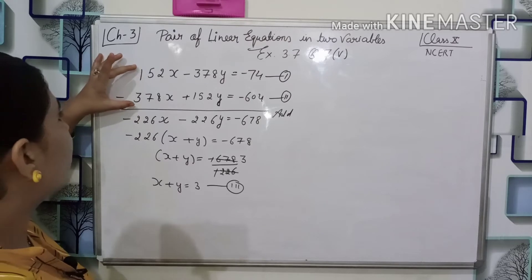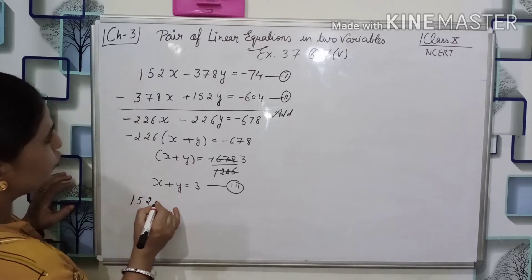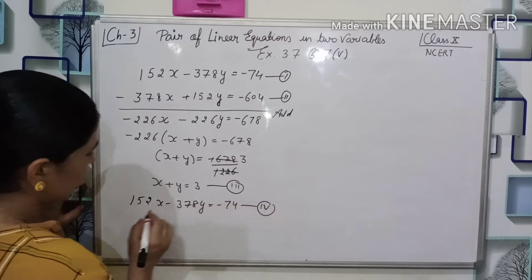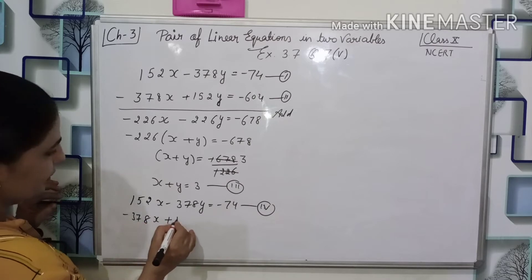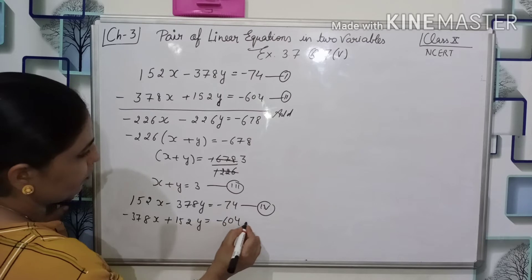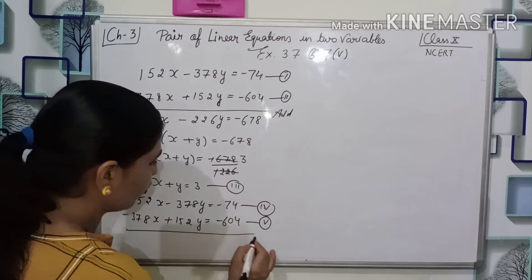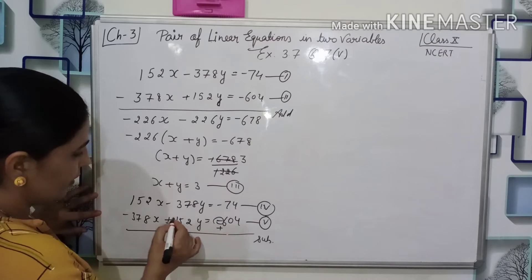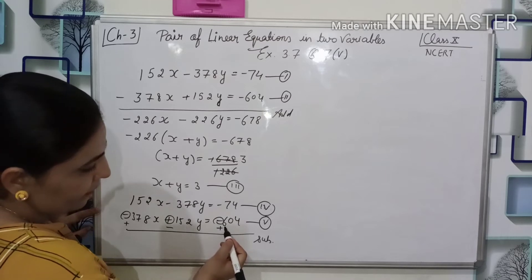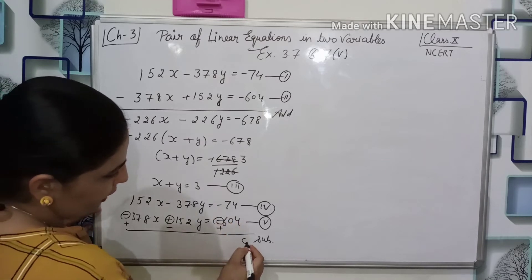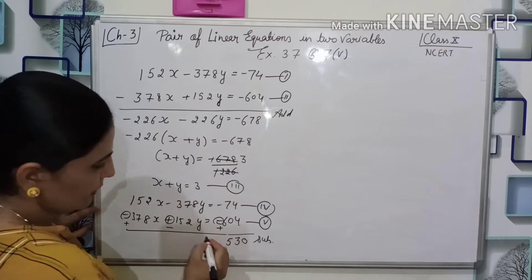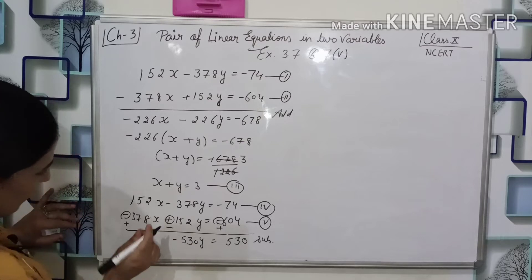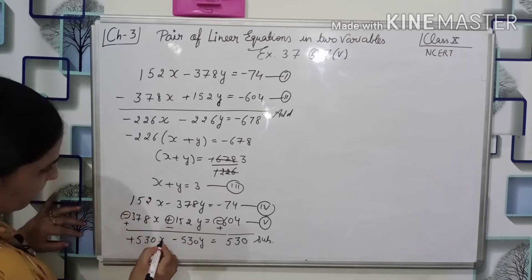Now for the second simplified equation, we take the original equations again. Equation 4: 152x minus 378y equals minus 74. Equation 5: minus 378x plus 152y equals minus 604. We subtract equation 5 from equation 4. When subtracting, signs change: minus becomes plus and plus becomes minus. Solving: on the right side, 604 minus 74 gives 530. On the left side, (152 minus (minus 378)) for x gives 530x, and the y terms cancel to give 0.